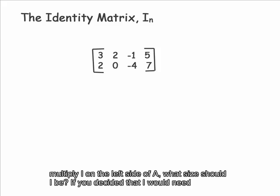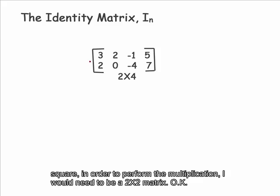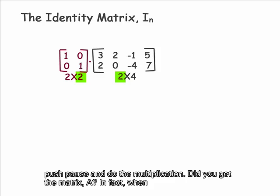If we multiply I on the left side of A, what size should I be? If you decided that I would need to be a 2 by 2 matrix, you're right. Since A is a 2 by 4 matrix, and since I must be square, in order to perform the multiplication, I would need to be a 2 by 2 matrix. Okay, push pause and do the multiplication.